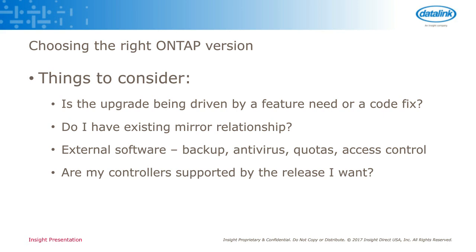There shouldn't be any existing mirror relationships causing issues. As of ONTAP 8.3, this is less of an issue, but if you're on version 8.2 or older, when you've got a snap mirror relationship you need to keep those versions in alignment. Anytime you've got something going from a source to a destination, you need to make sure that the destination version is always at the same or a newer version of ONTAP, otherwise those mirror relationships are going to fail. Also consider external software — you see a lot of problems with customers that upgrade ONTAP but don't think about the fact that they might have a version of Veritas NetBackup that isn't supported with the newer version, so make sure those third parties are supporting the new version as well.